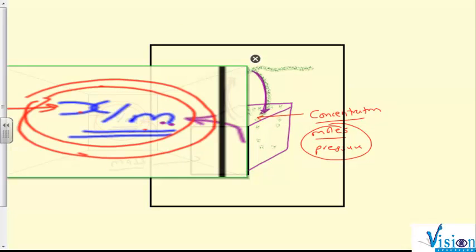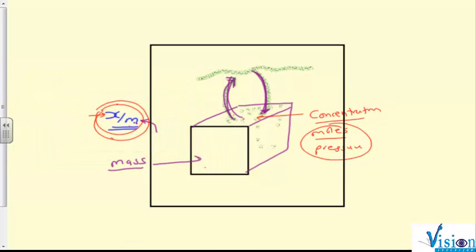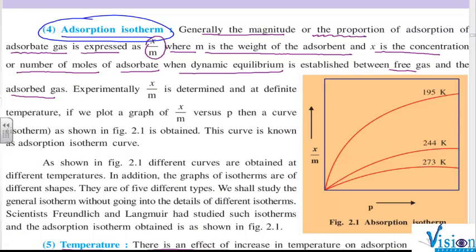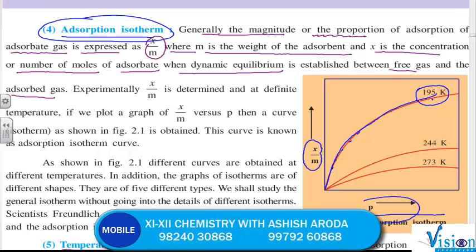At different pressures, keeping temperature constant, when they measure x by m and if they plot a graph, then that graph is a curve. This curve is known as adsorption isotherm curve.